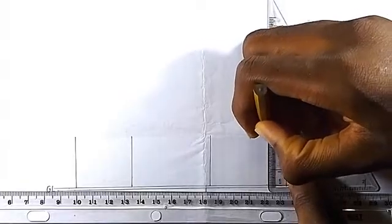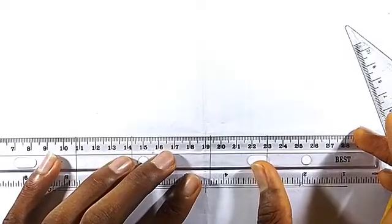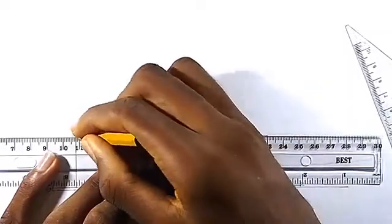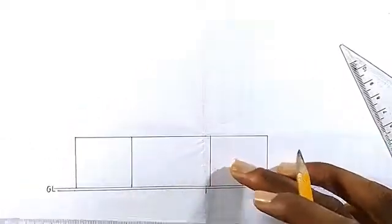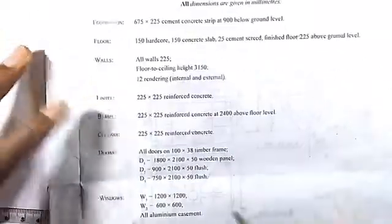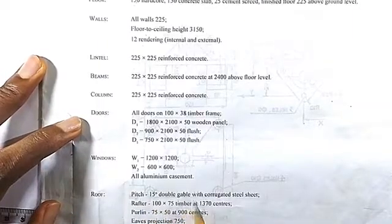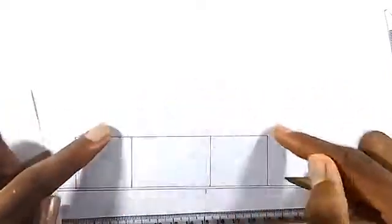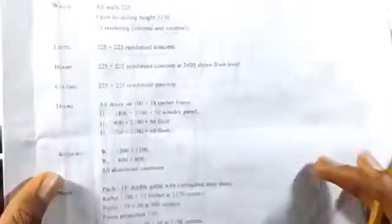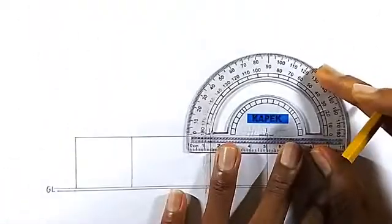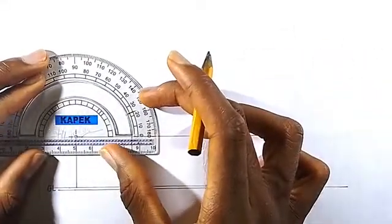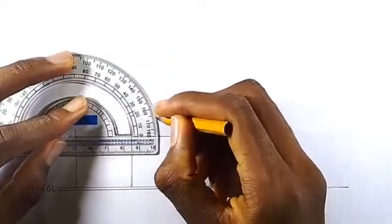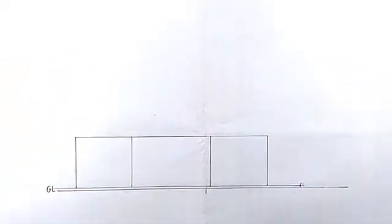Here we go. We've drawn the floor to ceiling height, so just join them together. After joining the floor to ceiling height, the next thing is drawing the roof. For the pitch roof we have 15 degrees — a double gable with corrugated steel sheet. 15 degrees means the roof is slanted 15 degrees on each side, joining at the ridge point. Using our protractor, measure 15 degrees on each side, then join our lines for them to intercept.